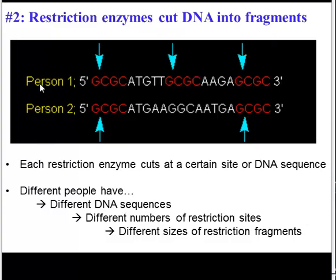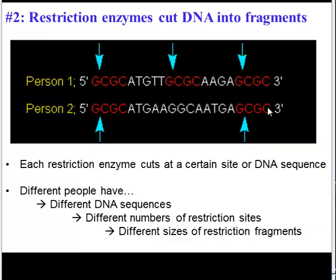As you can see, person one has three restriction sites, so their DNA is going to be cut into four fragments. Person two only has two restriction sites, so their DNA will be cut into three fragments.